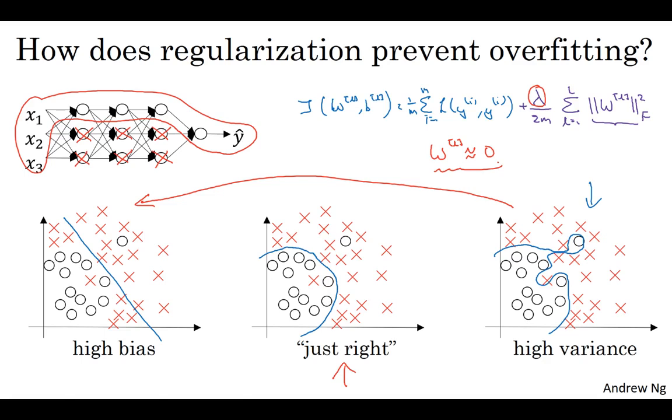So you end up with what might feel like a simpler network that gets closer and closer, as if you were just using logistic regression. The intuition of completely zeroing out a bunch of hidden units isn't quite right. It turns out that what actually happens is it'll still use all the hidden units, but each of them will just have a much smaller effect. But you do end up with a simpler network and as if you have a smaller network that is therefore less prone to overfitting. So I'm not sure if this intuition helps, but when you implement regularization in the program exercise, you actually see some of these variance reduction results yourself.